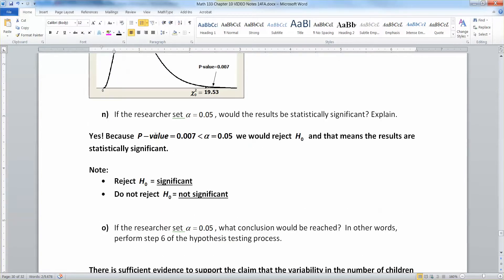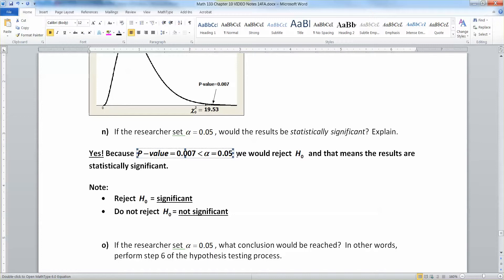If the researchers set alpha to be 0.05, would those results be statistically significant? Well, yes, absolutely. And that's because your p-value, which is 0.007, is less than our level of significance alpha. So we would reject the null hypothesis, and that means the results are statistically significant.